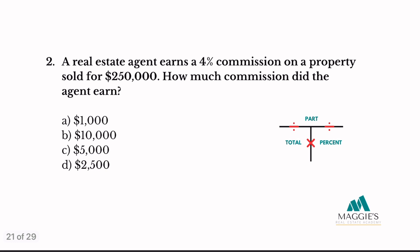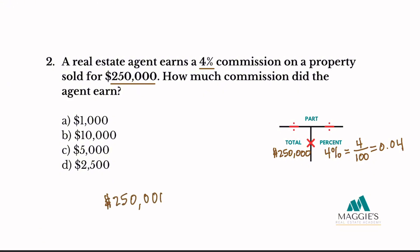Problem 2: A real estate agent earns a 4% commission on a property sold for $250,000. How much commission did the agent earn? The property sold for $250,000, which goes in the total sales price column. The 4% commission rate goes in the right column. Convert to a decimal by dividing by 100, giving 0.04. Multiply: 250,000 × 0.04 = $10,000. The answer is B.